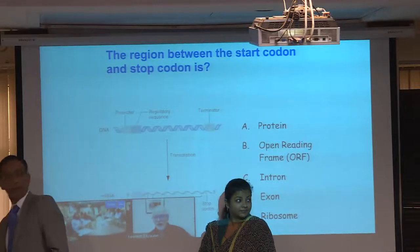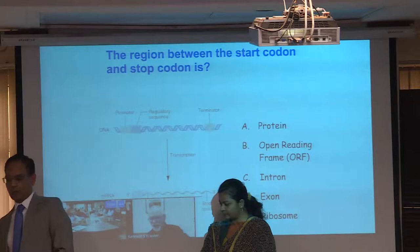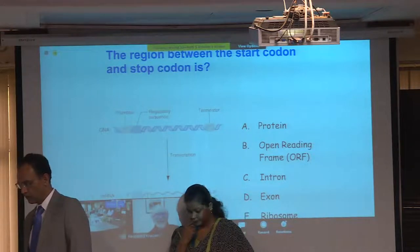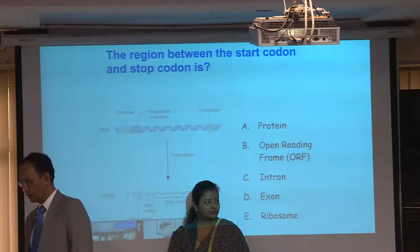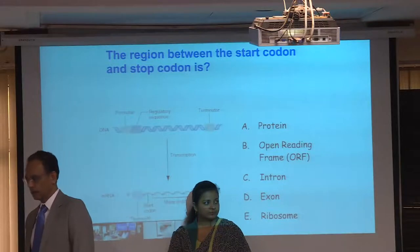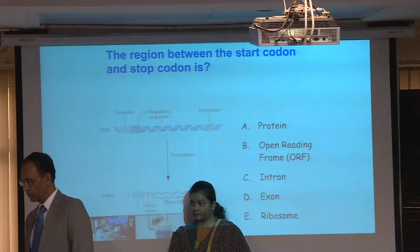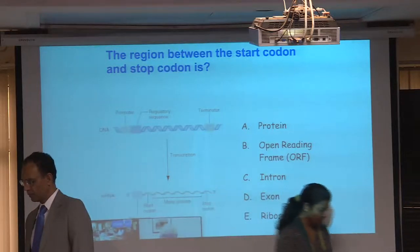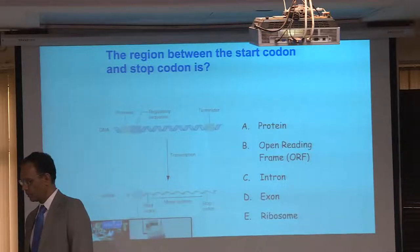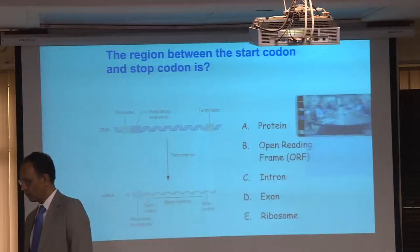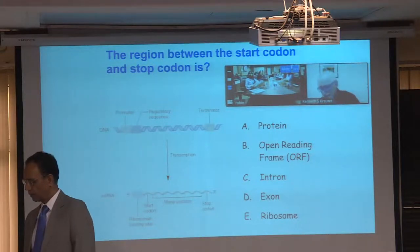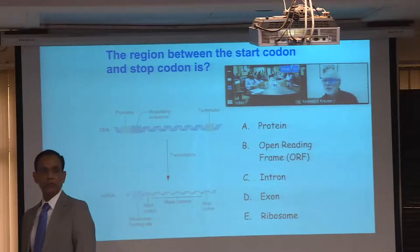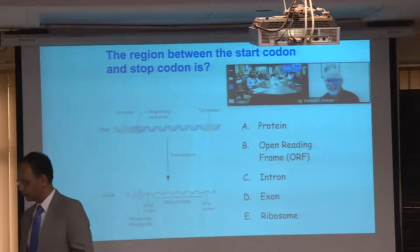Some more terms. After RNA is produced, the RNA is translated into protein. The messenger RNA has a number of features listed A through E. The question is: what is the region between the start codon and the stop codon called? B — correct.